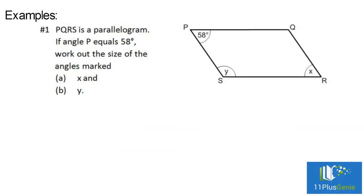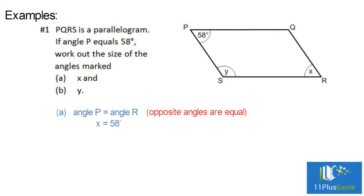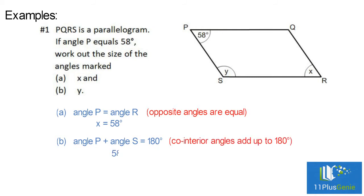Example 1: PQRS is a parallelogram. If angle P equals 58 degrees, work out the size of the angles marked X and Y. Angle R is opposite angle P, and opposite angles of a parallelogram are equal, so X equals 58 degrees. Angle P and angle S are co-interior angles: 58 degrees plus Y equals 180 degrees. Y equals 180 minus 58, which equals 122 degrees.